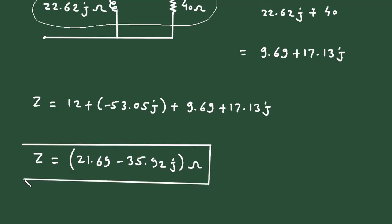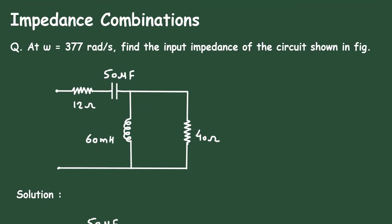So this is the value of total impedance or input impedance. This is how we can find total impedance of the circuit. Don't forget to check out the other videos on this channel and thanks for watching.